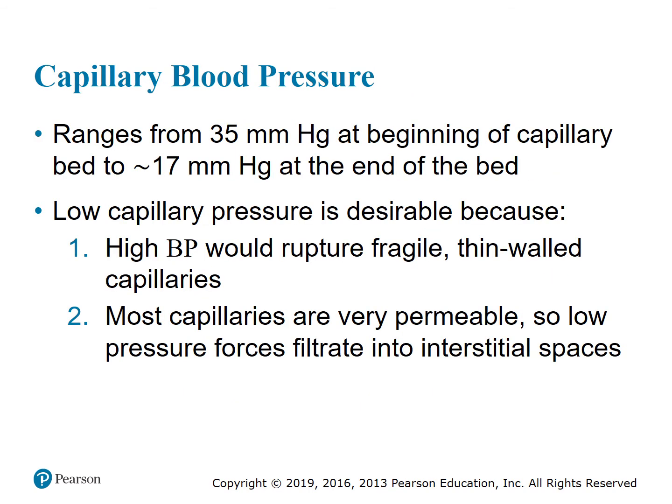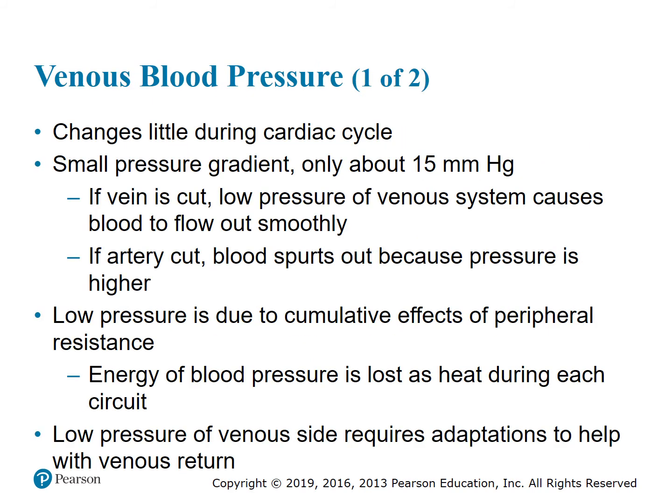Capillary blood pressure ranges from 35 mmHg at the beginning of the capillary bed to approximately 17 mmHg at the end. Low capillary pressure is desirable because high blood pressure would rupture the fragile thin-walled capillaries, and most capillaries are very permeable so low pressure forces filtrate into interstitial spaces. The small pressure gradient in veins is about 15 mmHg. If a vein is cut, blood flows out smoothly; if an artery is cut, blood spurts out. Low venous pressure is due to cumulative effects of peripheral resistance, and the energy of blood pressure is lost as heat during each circuit.